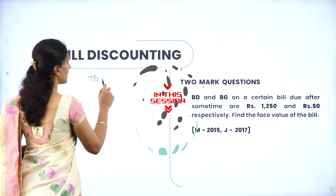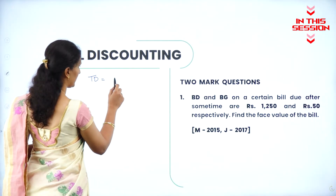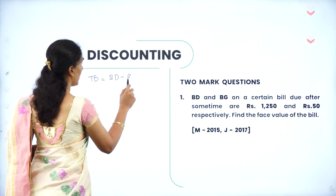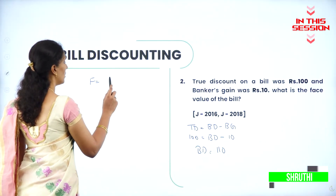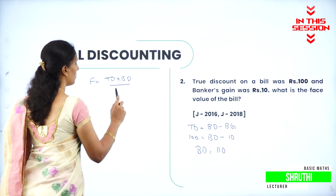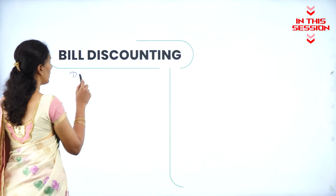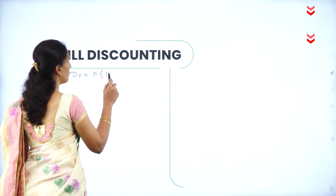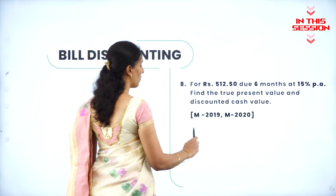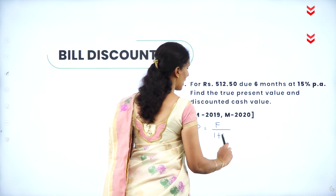True discount is equal to banker's discount minus banker's gain. F is equal to true discount into banker's discount divided by banker's gain. The noted value will be equal to F into 1 minus TR. We know the formula for present value that is F divided by 1 plus TR.